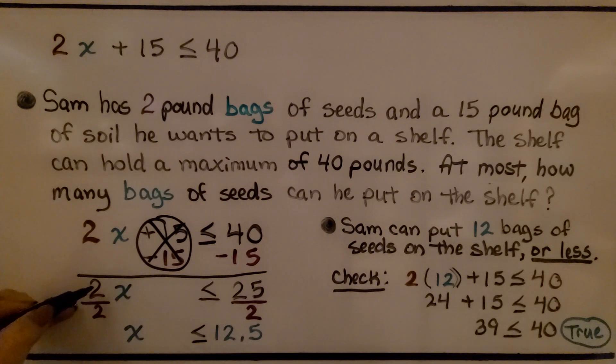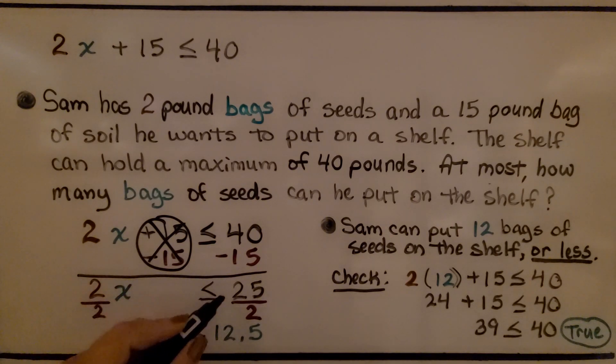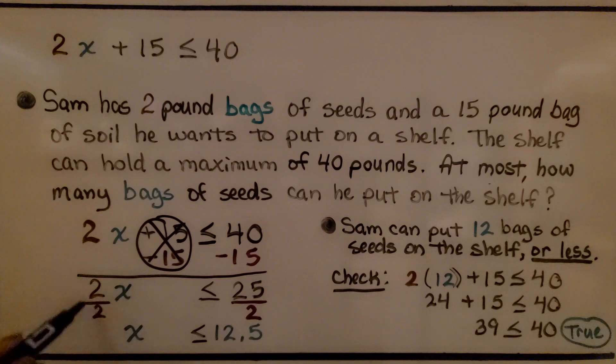And now, we have 2 pound bags of seeds is less than or equal to 25. We divide both sides by the 2 coefficient for the 2 pounds. We have the same numerator and denominator, which means we have 1x. And, like I always say, we don't have to write that one. We just write an x for 1x. 25 divided by 2 is 12 and 5 tenths.